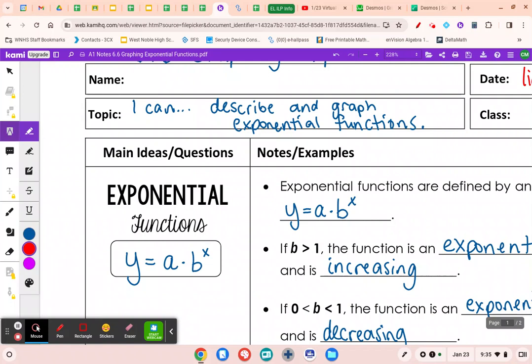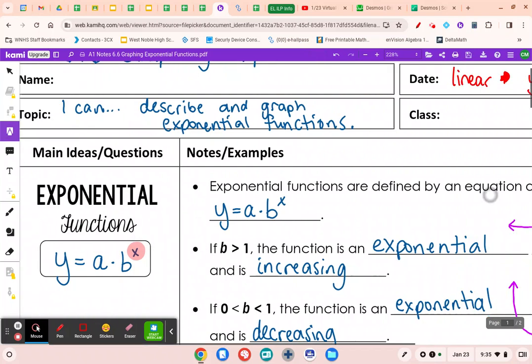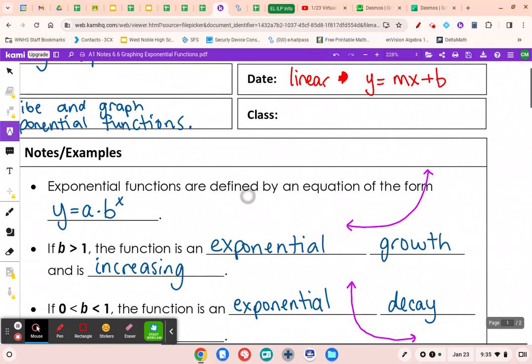The main difference here is that we have an exponent. That's why we just did our whole last chapter on dealing with exponents, because we have more exponent stuff that we're going to start working with. Linears don't have an exponent.